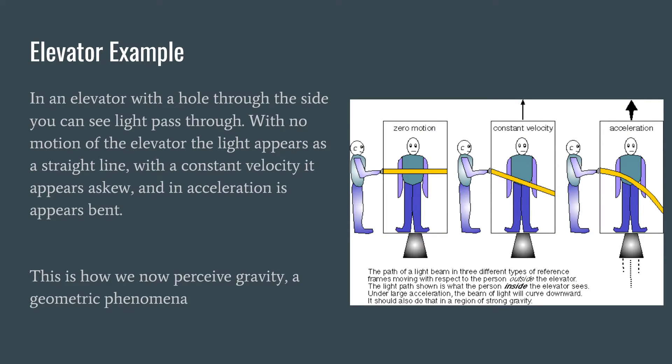So we'll talk about the elevator example, and this is obviously not an example that was initially used by Einstein, but it is one that's very easy to understand. So let's imagine you're standing in an elevator, much like the poorly drawn man is on the right and there's a hole bored through one side. If you are the poorly drawn man in the elevator and a person is shining a light through that hole and you are not in motion, the light will appear as a straight ray.